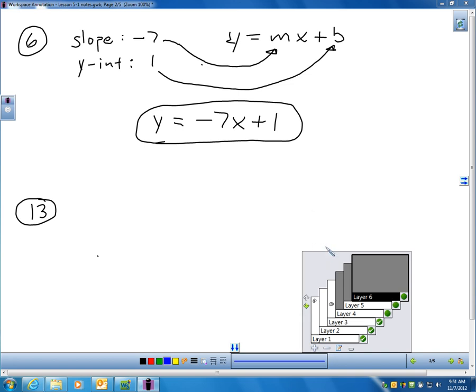In question 13, they have a line. So, the first thing is if I have a line, remember, that means I can write an equation in slope-intercept form.